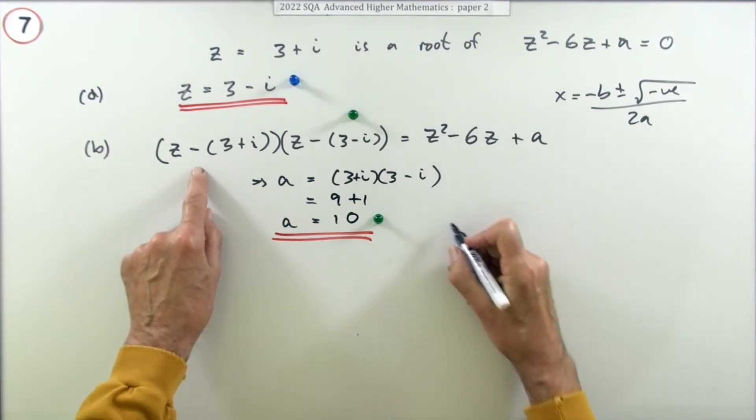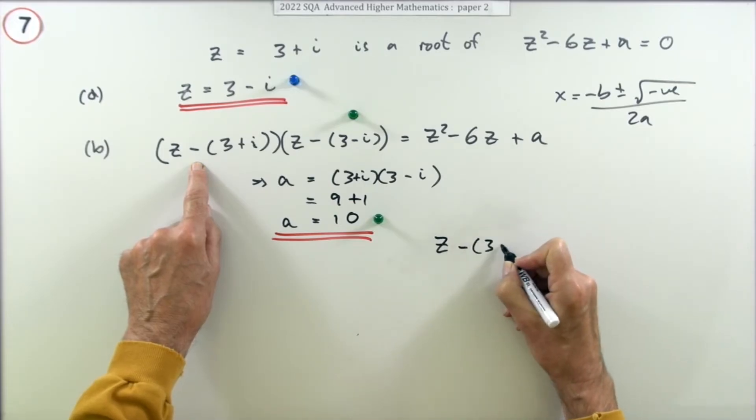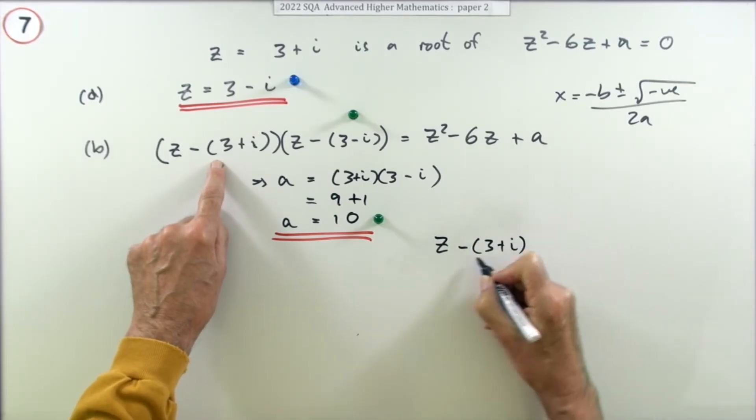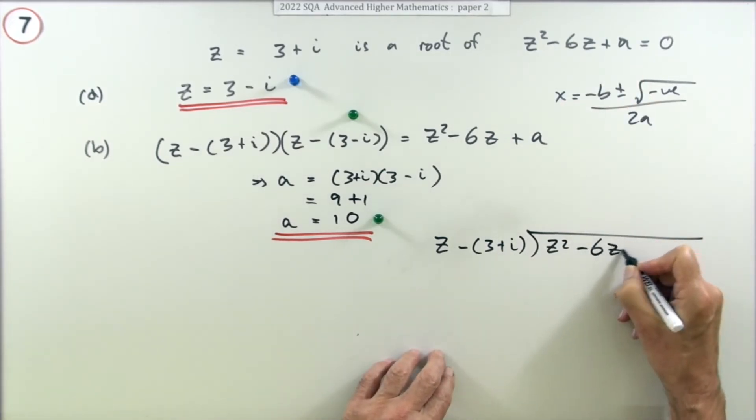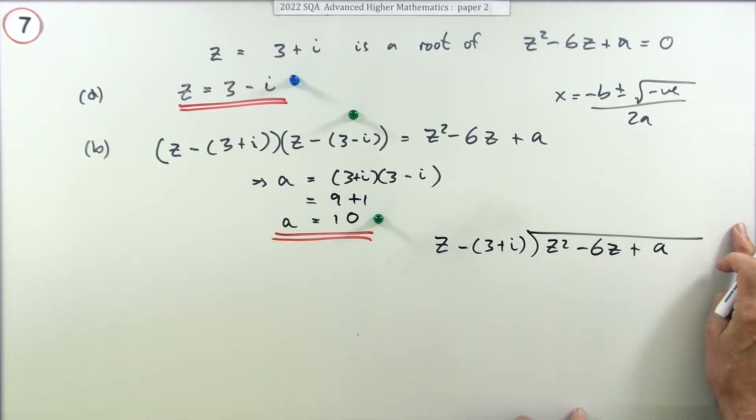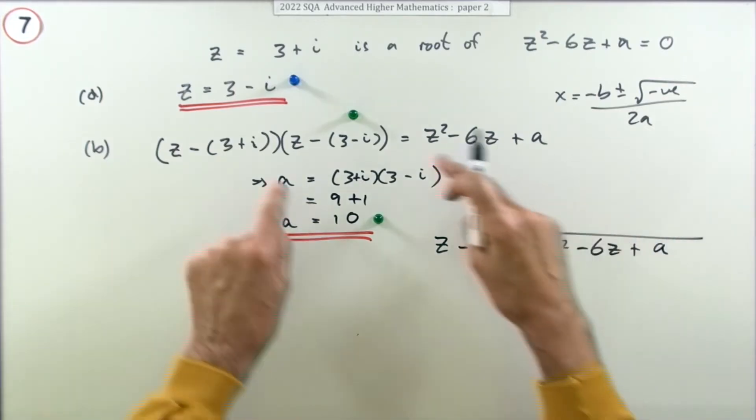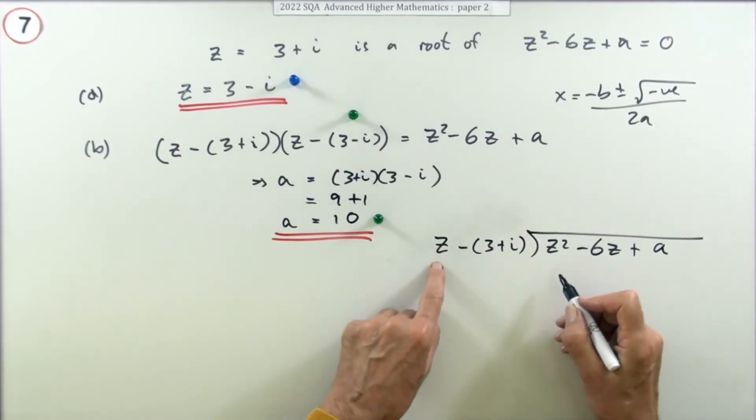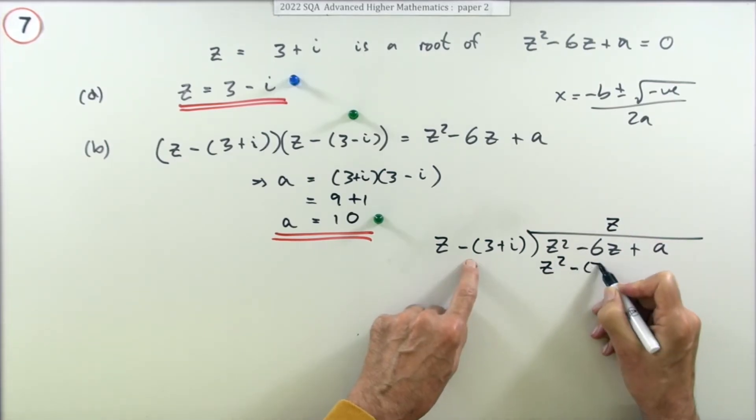So you would say, well for instance, take this factor z minus 3 plus i is a factor of z squared minus 6z plus a. That means it should divide into it exactly. Not only that, it should divide into it and the result should be the other one, which is just z. So multiplying by z will create that term minus 3 plus i times z.